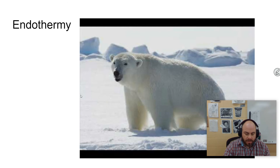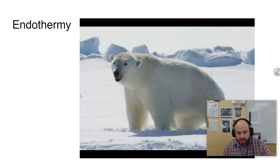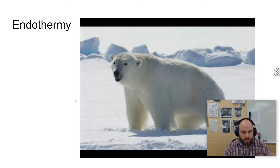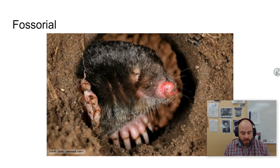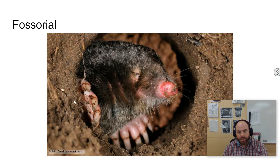The other method is endothermy, where body temperature is maintained from within. This polar bear has internal mechanisms to keep him warm, as well as external ones like fur. Some modifications animals use to stay cool: some animals are fossorial, meaning they live in the ground, which is cooler than the surface. Some animals are nocturnal, being more active at night than during the day. Others, like ourselves, use evaporative cooling — when we sweat, the sweat evaporates off our skin, producing a cooling effect that lowers body temperature.